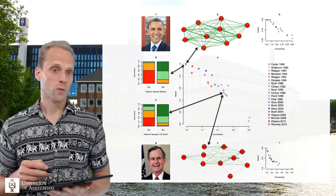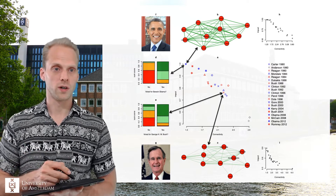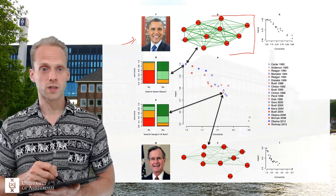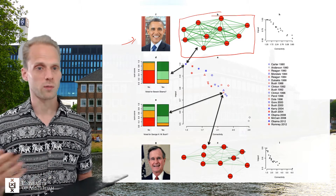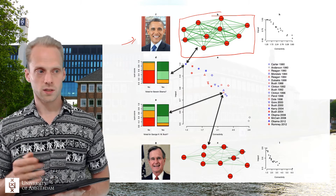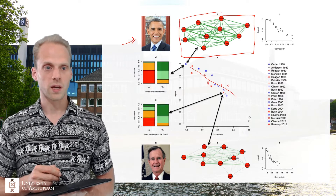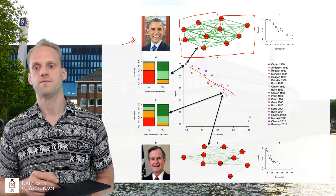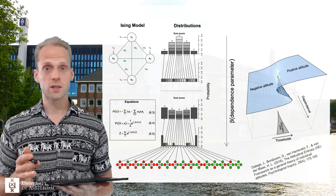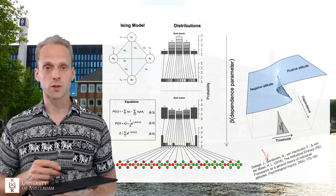What he found was that the more strongly opinionated people were on an attitude object - for example, Obama here is an attitude object - the more strongly connected their attitude network was of attitude elements. For example: I think Obama is a good president, I think Obama is a good father, things like that. He found this multiple times: there is a very strong relationship between connectivity and the impact an attitude object has on people. He used that to formalize a mathematical theory for attitude formation, which is an extremely powerful thing, and I can highly recommend reading these beautiful papers that are also chapters in the dissertation.